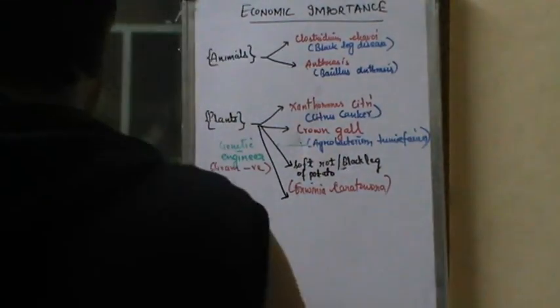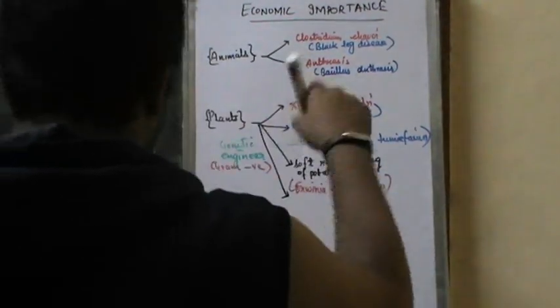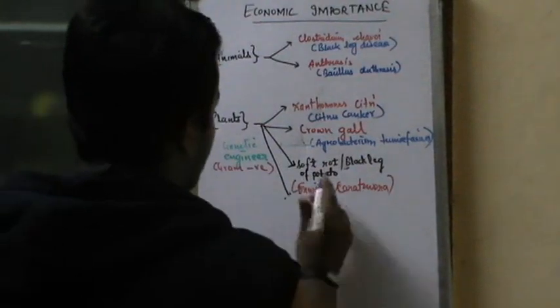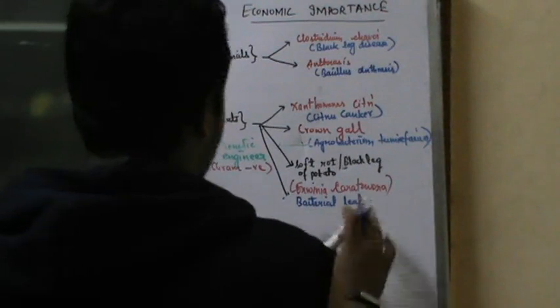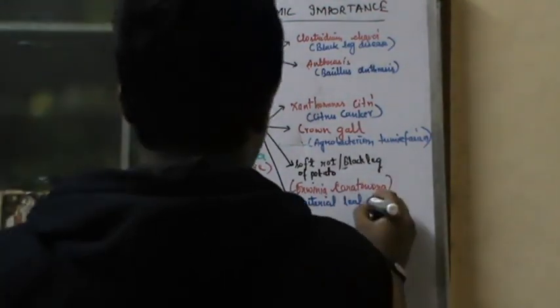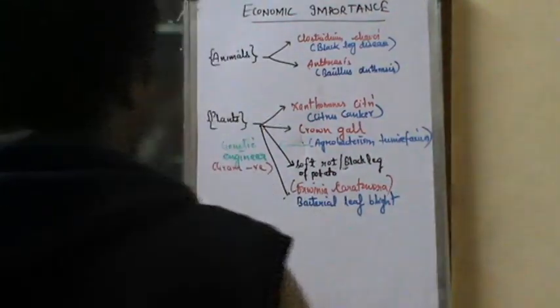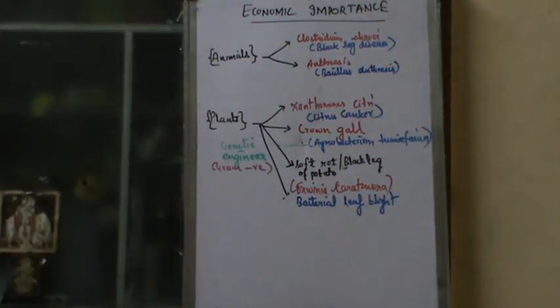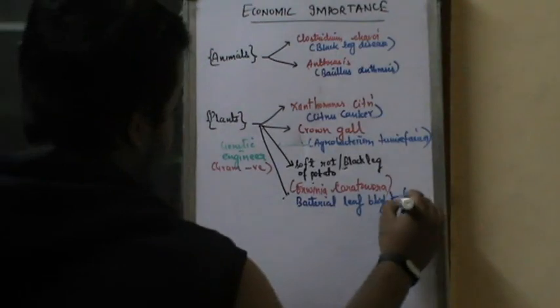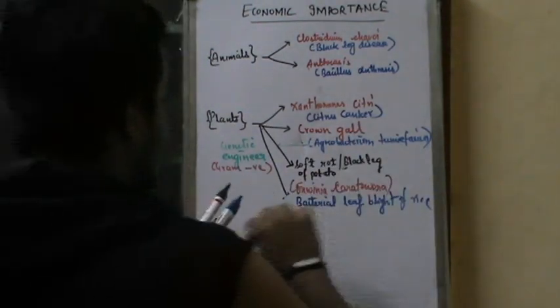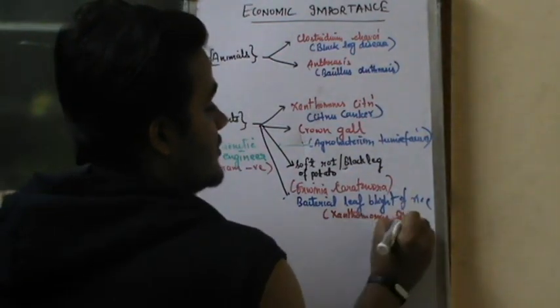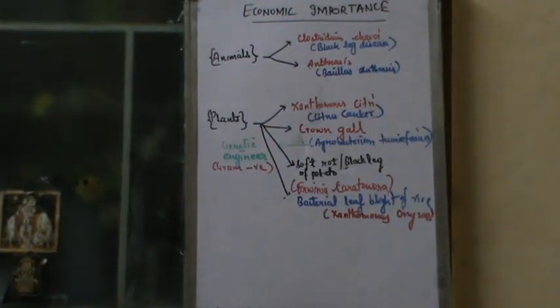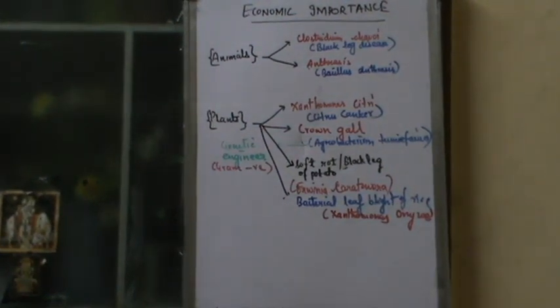Bacterial Leaf Blight — or bacterial leaf disease of rice — is something caused by Xanthomonas oryzae. You have to remember this particular one. These are the disease-causing particular types of bacteria.